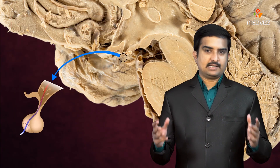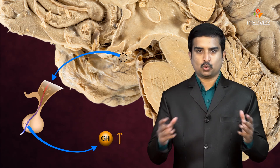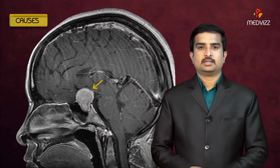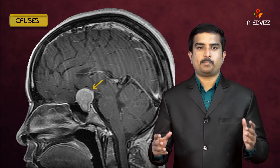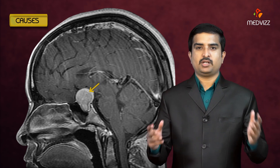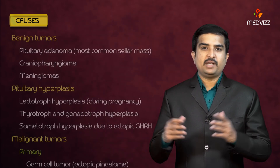The topic of discussion is gigantism and acromegaly — both clinical syndromes result from sustained excess of growth hormone. The main cause of growth hormone excess is the pituitary somatotropic adenoma, which is the second most common pituitary adenoma.